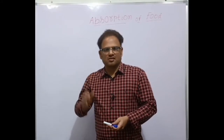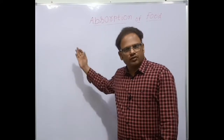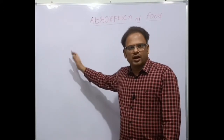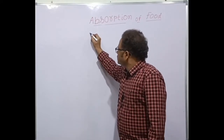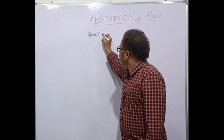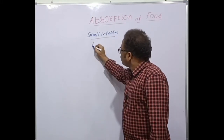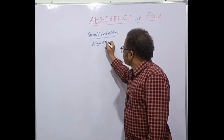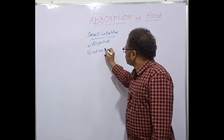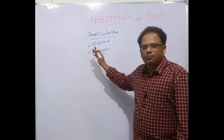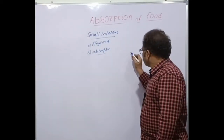Hi students, welcome back. In the previous sessions we were discussing the digestion of food and how it occurs. The main part of digestion is the small intestine, where food is not only digested but also absorbed. So the small intestine is the main organ of digestion as well as absorption.